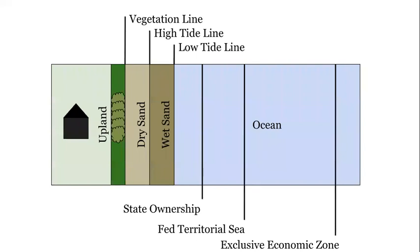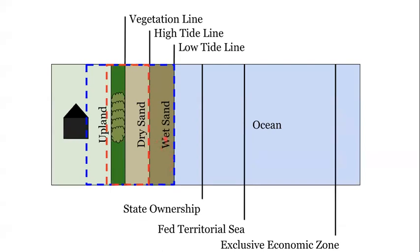We can begin by recalling the traditional zones of the coastline, as described in our previous lecture materials and video, with a visual representation here. The Coastal Zone includes both portions of dry land — the dry sand vegetation area and a bit of the upland represented in the red dotted square — and also portions of submerged land, including some of the wet sand in the blue dotted line portion.